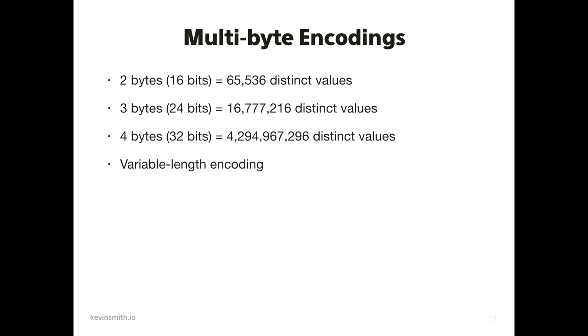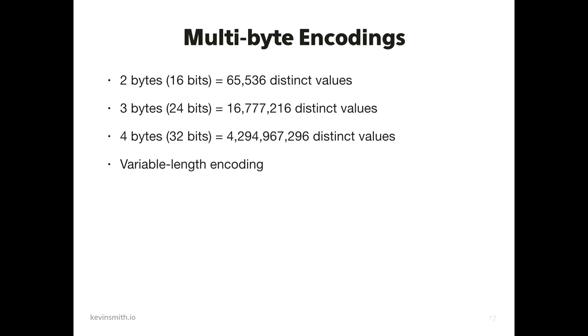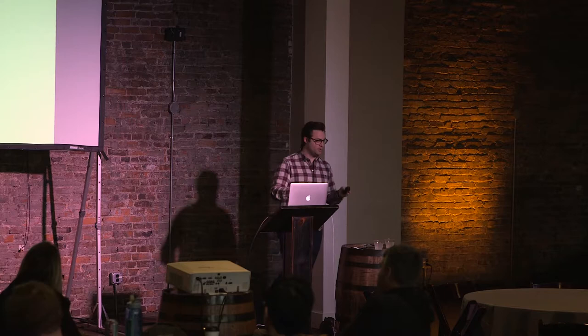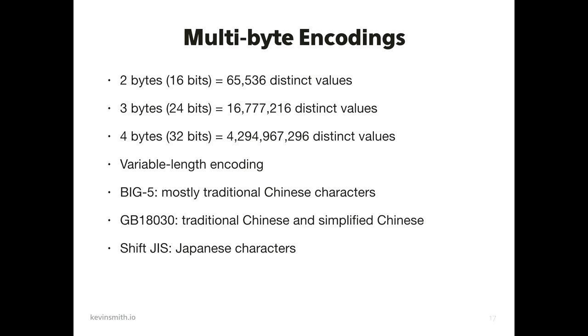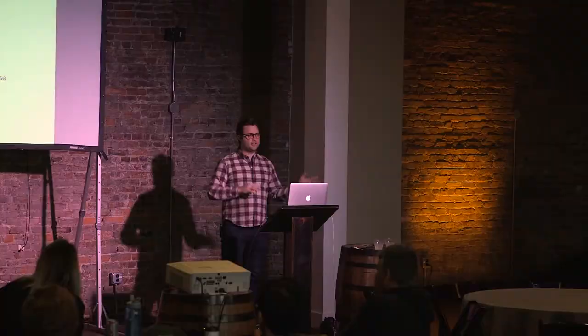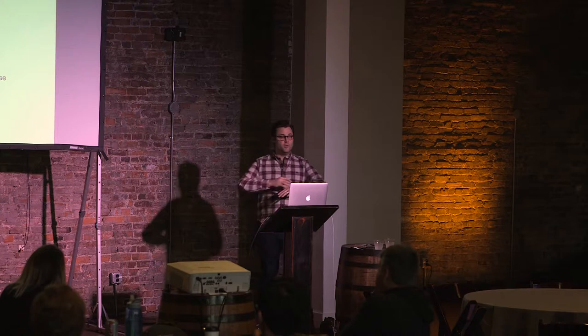A variable-length encoding means your encoding might use one byte to determine a character, or it might use two or three — it's not going to consistently always use the same number. In multibyte encodings, several have become very popular: Big Five covers mostly traditional Chinese; there's a different one for traditional and simplified Chinese; a totally different character set for Japanese. But we're starting to see an explosion in different character sets that cover the needs of one language or maybe a couple, but they're not compatible with all languages.